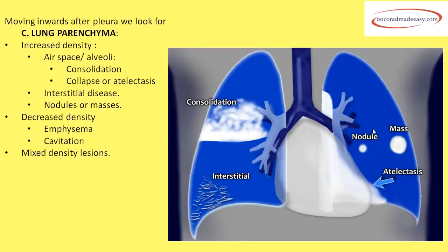Moving more inwards is the lung parenchyma. In the lung parenchyma there can be increased density, decreased density, or mixed density lesions. Increased density lesions include consolidation, collapse, interstitial disease, and nodules or mass. Decreased density lesions include emphysema or cavitation, and the third category is mixed density lesions.